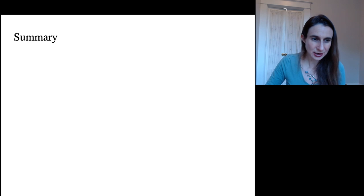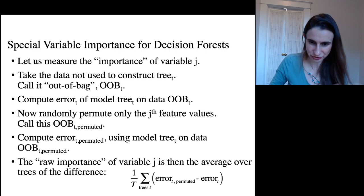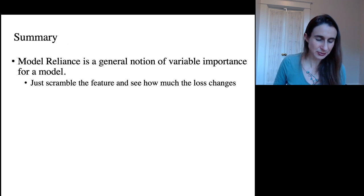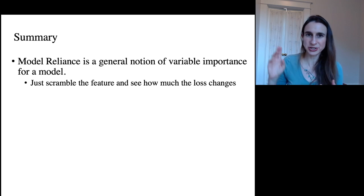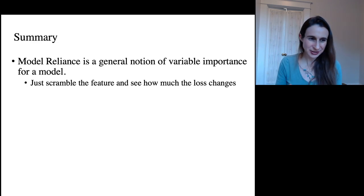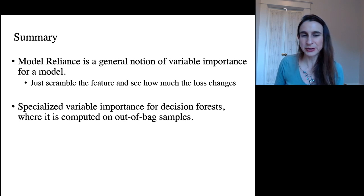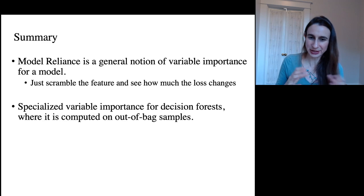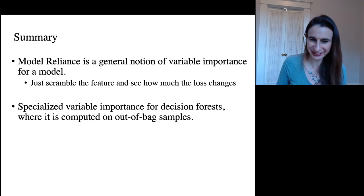For the overall variable importance, you average them all together over all of the iterations — over all the trees you get on each iteration. To summarize: model reliance is a general notion of variable importance that you can use for any model, whether it's a support vector machine, a random forest, a boosted decision series — any model. You scramble the variable and compute the error with and without. And there's a specialized notion for decision forests where it's computed on out-of-bag samples, giving you a nice out-of-sample measure of the error. Both are good — you can use whichever one you like to report variable importance.